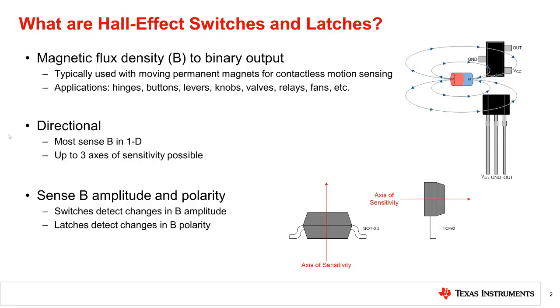Hall effect switches and latches are directional and sense the B-field components along their axes of sensitivity. Most have a single axis of sensitivity, although some specialized devices may have up to three axes of sensitivity.